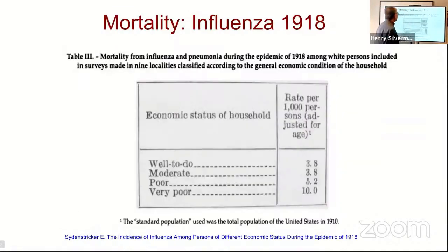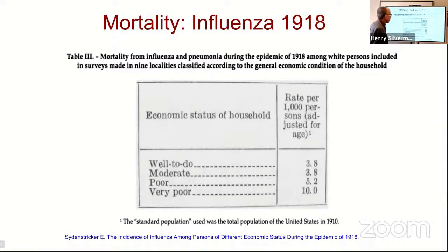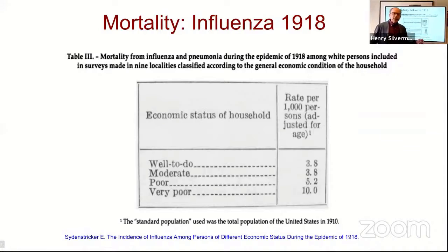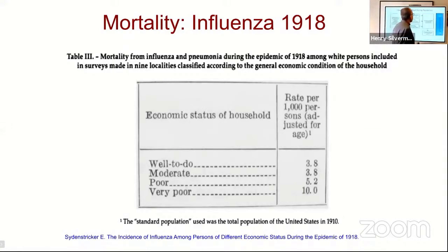We see that the incidence is much higher in the poor and the very poor. Looking at mortality data, we see the economic status of the household — well-to-do, moderate, poor, and very poor — and the mortality of the very poor is much higher. This data is very similar to the data being generated during the COVID-19 pandemic of 2020.